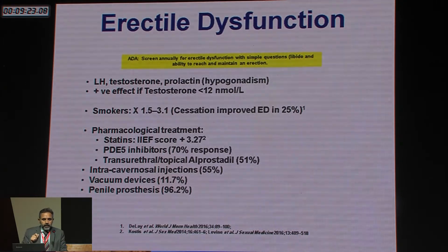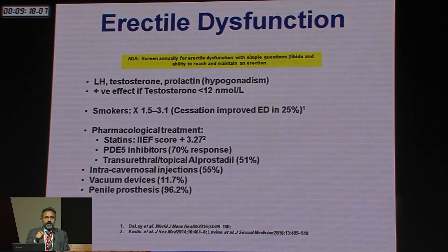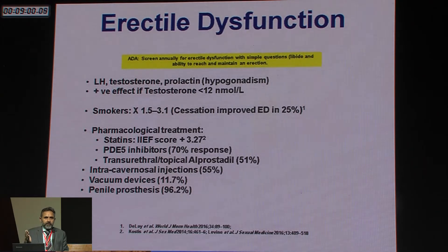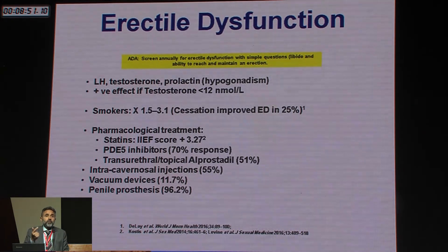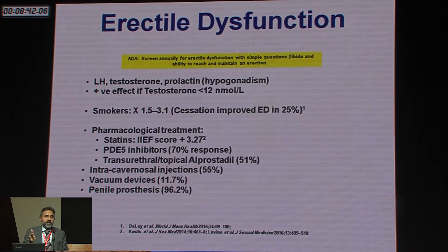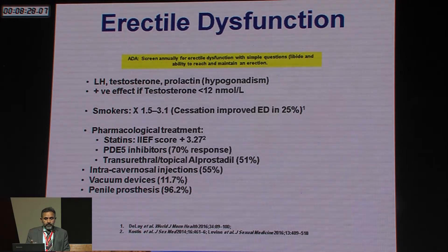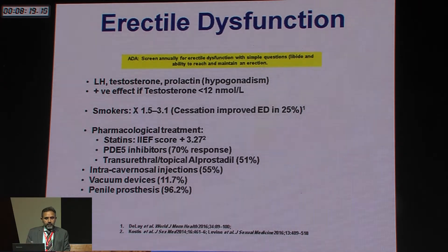Erectile dysfunction: the ADA recommends asking about it every year. Test LH, testosterone, and prolactin for hypogonadism. If testosterone is less than 12 nanomoles per liter, consider testosterone therapy. If the patient is a smoker, smoking cessation improves erectile dysfunction by 25%. Pharmacological treatments include statins — shown to improve erectile function by a score of 3 — PDE5 inhibitors, transurethral or topical alprostadil, intracavernosal injections, vacuum devices, and penile prosthesis.